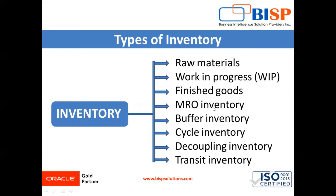Next is MRO inventory. MRO stands for Maintenance, Repairing, and Operating supplies. This type of inventory is mostly relevant to manufacturing industries. MRO items are not accounted as inventory items in the books of accounts; however, they play a crucial role in the day-to-day working of an organization. MRO supplies are used for maintenance, repair, and upkeep of machines, tools, and other equipment used in the production process. Examples of MRO items are lubricants, coolants, uniforms, gloves, nuts, bolts, and screws.